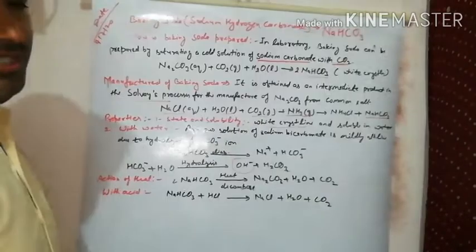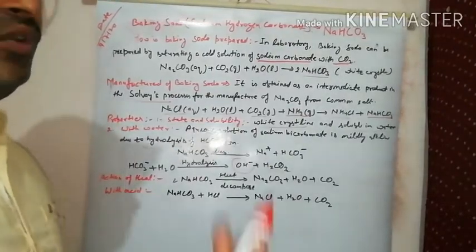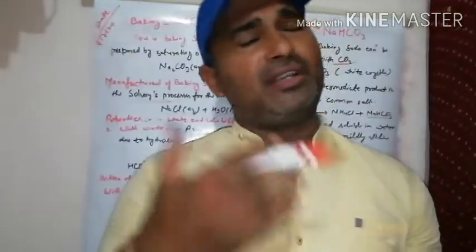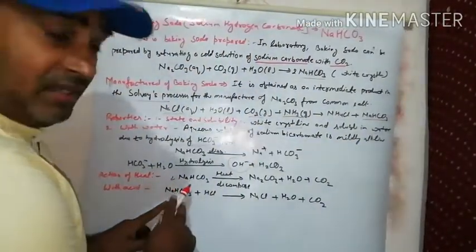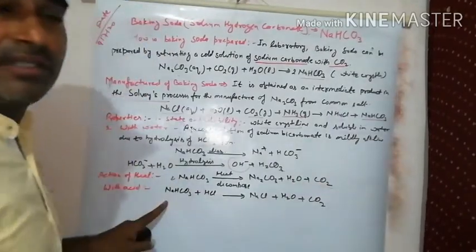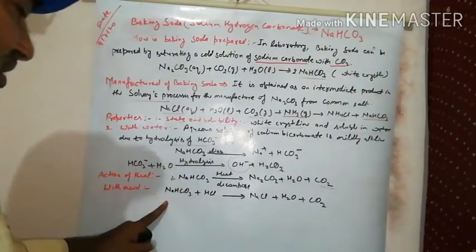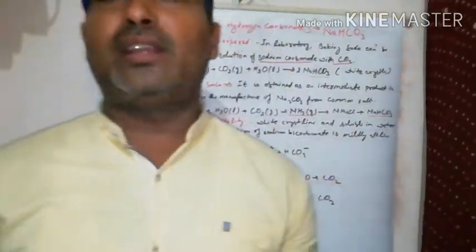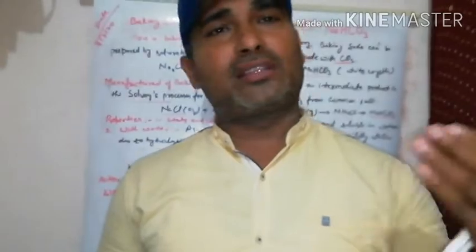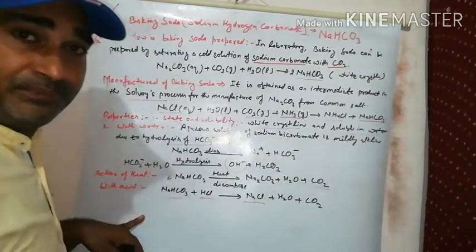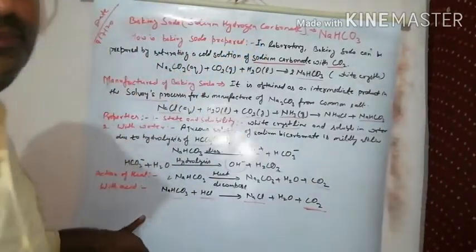When you heat sodium bicarbonate, it decomposes and releases carbon dioxide gas. On heating, sodium bicarbonate decomposes to give sodium carbonate, carbon dioxide gas, and water. When baking soda reacts with acid, it again decomposes and evolves carbon dioxide gas. The reaction of acid with sodium bicarbonate gives a common salt plus carbon dioxide gas.